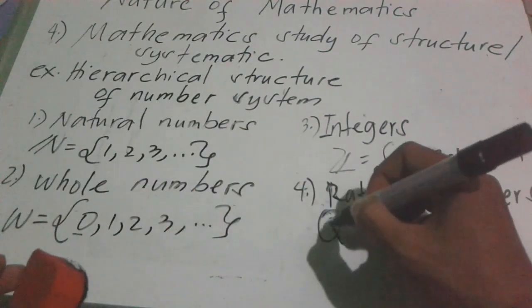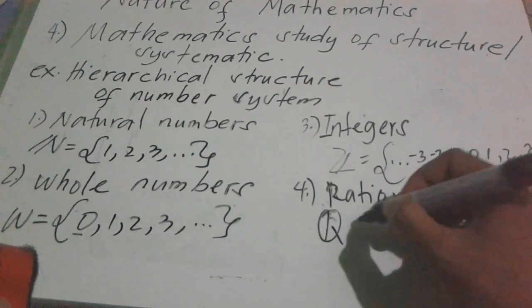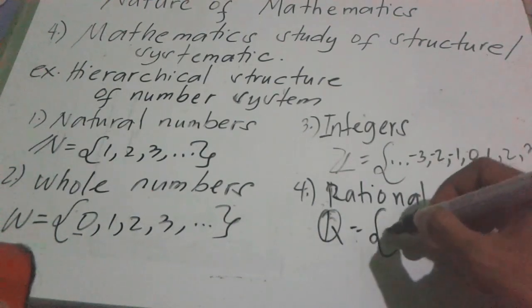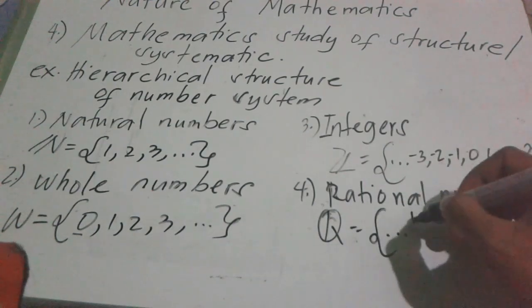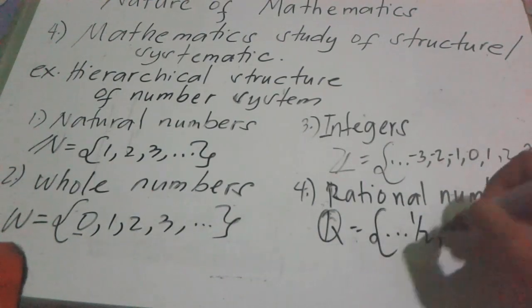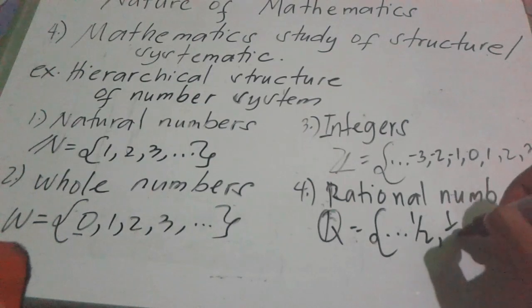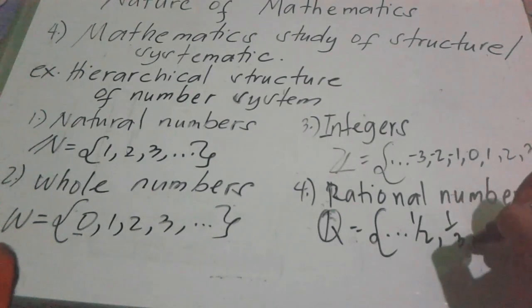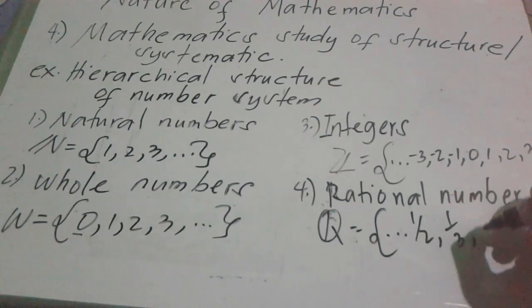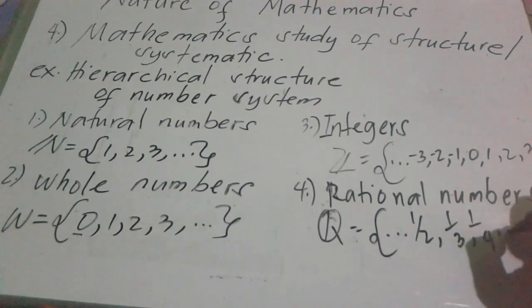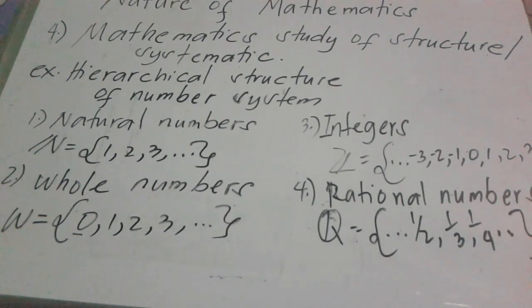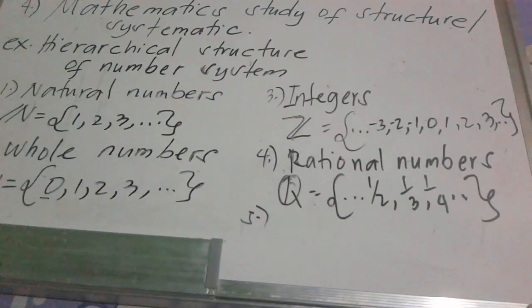For example: one-half, one-third, one-fourth, and so on. Those are examples of rational numbers.